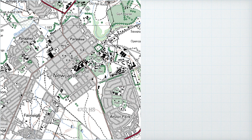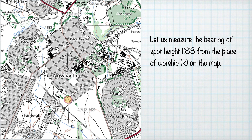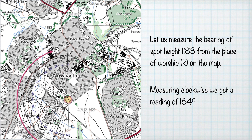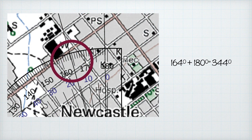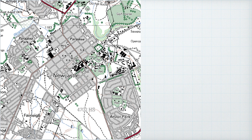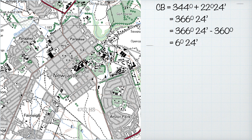Now let's put it together and work out a map bearing and then a compass bearing. Working from a place of worship to spot height 1183, we draw a north-south line and a line joining the two points. We measure from south and get 164 degrees. Since we're on the left-hand side, we add 180, giving a map bearing of 344 degrees. Adding the magnetic declination of 22 degrees 24 minutes gives 366 degrees 24 minutes — greater than 360.